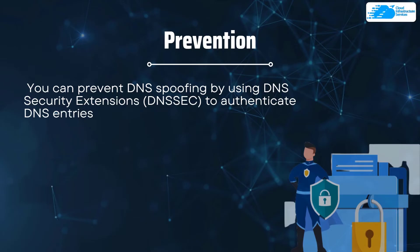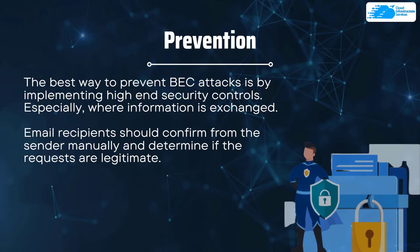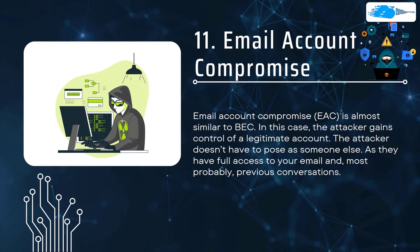At number ten we have Business Email Compromise (BEC). This is a sophisticated scam targeting businesses and individuals. Most BEC attacks use social engineering and impersonation to trick the recipient; others use domain spoofing and are often difficult to detect. The best way to prevent BEC is by implementing high-end security controls where information is exchanged, and email recipients should manually confirm requests with the sender.